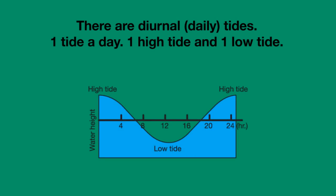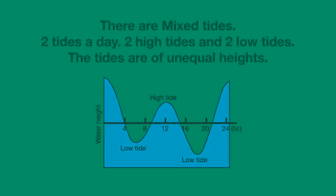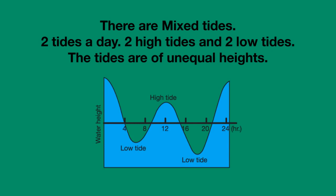There are diurnal, or daily, tides. This is a pattern of only one tide a day: one high tide, one low tide. And there are mixed tides — a pattern of two tides a day, two high tides and two low tides, but the tides are of unequal heights.